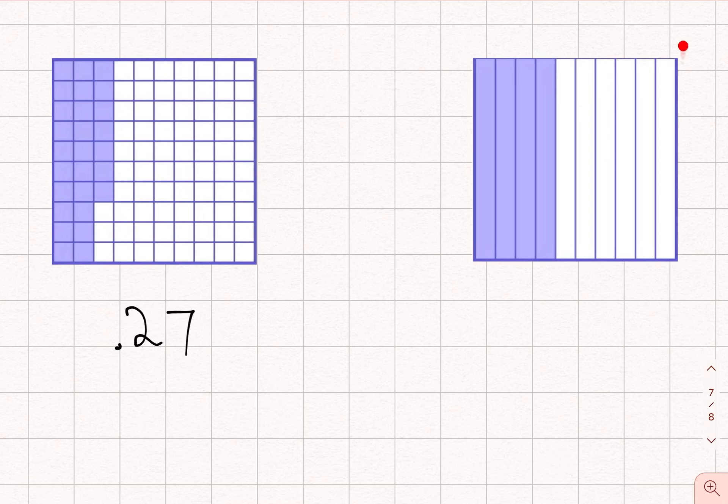This decimal number over here is divided up into tenths. Each one of these is one tenth. And how many tenths is it? Let's count. One, two, three, four tenths. I'm going to go ahead and record that decimal number.